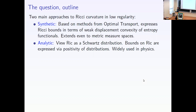That synthetic approach is very general — it doesn't need any differentiable structure, it extends to metric measure spaces, and it is compatible with pointwise Ricci curvature bounds for C² manifolds. Then there is another, older approach which I would call analytic: if you're on a manifold with a metric that is not C² but has lower regularity, you can still in many cases view the Ricci tensor as a Schwartz distribution and impose bounds on it.